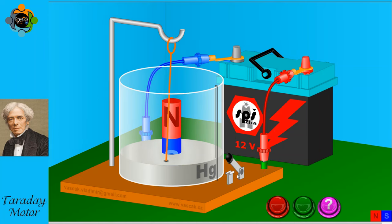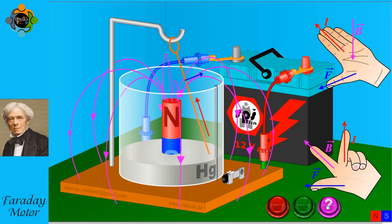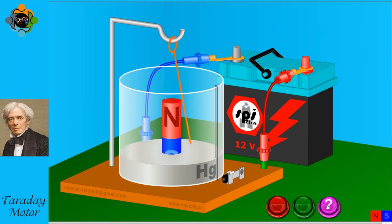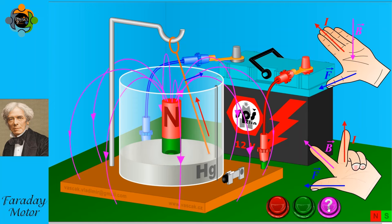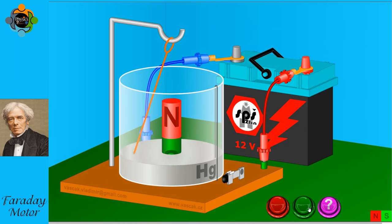By using the left-hand rule, you can determine the direction of force or motion in a Faraday motor when the magnetic field direction and the current direction are known. This rule helps in understanding the relationship between the magnetic field, current, and force in an electric motor.